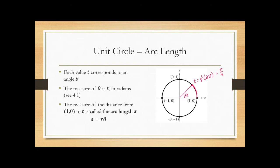S stands for arc length — S equals R times theta. The arc length is essentially equivalent to T when you have a unit circle. If you don't have a unit circle, arc length is not the same as T, but on the unit circle they are the same thing.